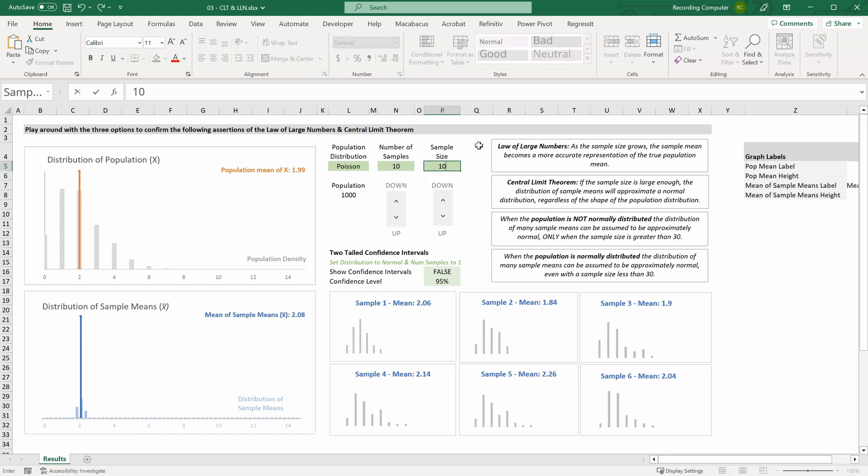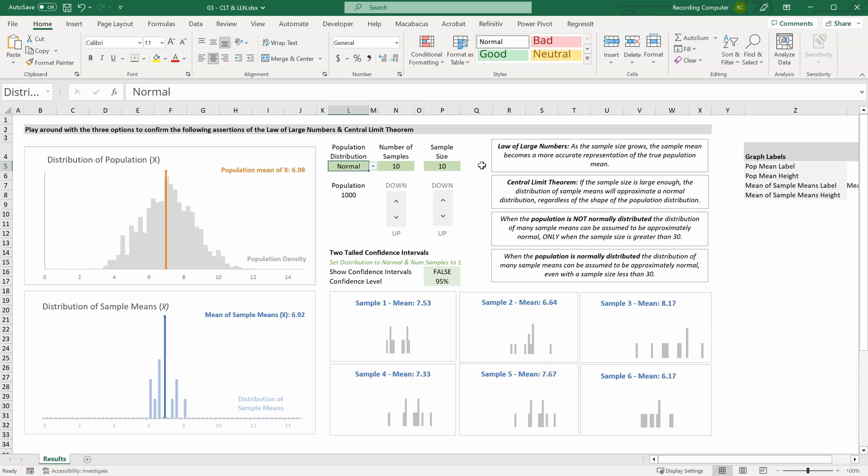So let's change our sample size back to 10, and our population distribution back to normal. Let's look at this final box. When the population is normally distributed, the distribution of many sample means can assume to be approximately normal, even with a sample size of less than 30. So right now we have 10 samples with a sample size of 10. And as we increase the number of samples this time, we can increase this to 25, and 50, and 100, we start to see that this is approaching a more normally distributed shape. So even though our sample size is quite small, with a sample size of 10, which is definitely less than 30, we're seeing a more normal looking distribution of our sample means, because the population is normally distributed.